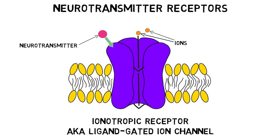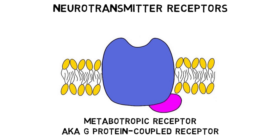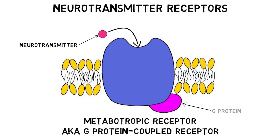The other major type of receptor is called a metabotropic receptor, also known as a G-protein-coupled receptor. Neurotransmitters also bind to these receptors, but instead of simply opening an ion channel, they cause the activation of a protein called a G-protein. The G-protein itself can influence the opening of ion channels, but it can also have other effects, such as activating enzymes and initiating signaling cascades within the cell.